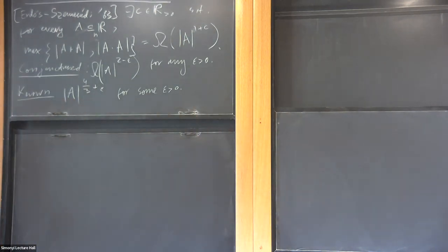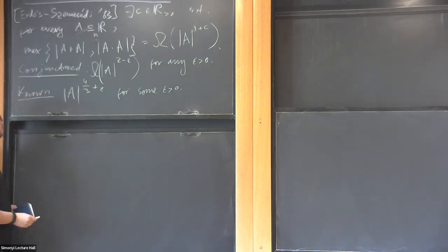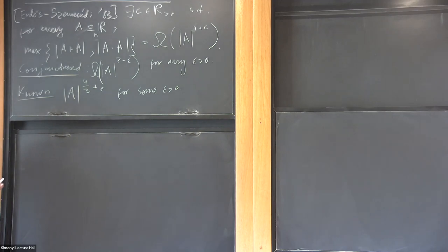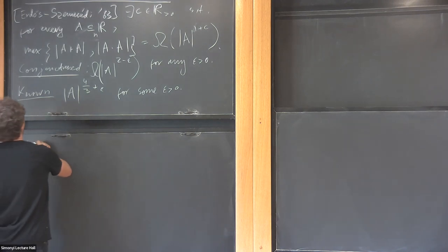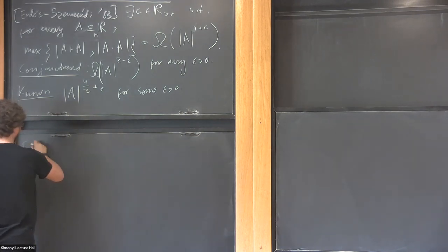Now that we know that addition and multiplication don't interact too much, one can also try to take a polynomial in two variables — and this is going to be a result of Elekes and Rónyai.